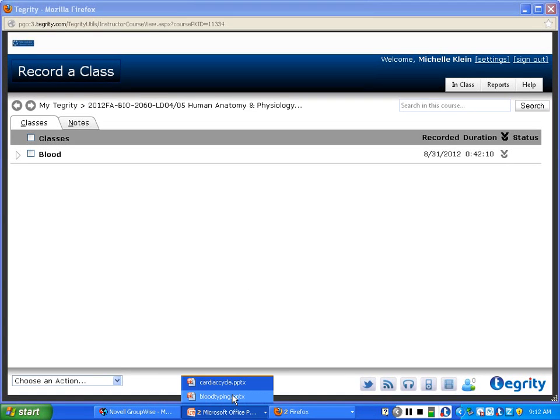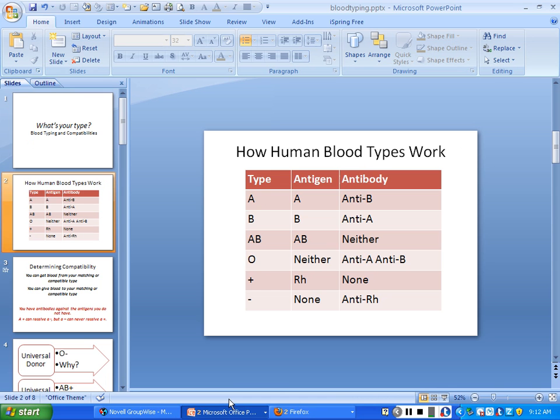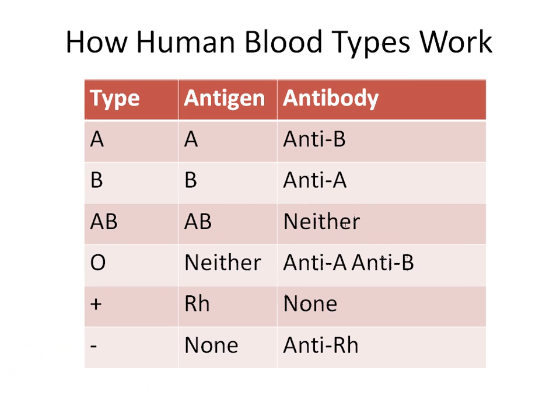Let's do a little bit of a review of blood typing and how it works. Recall that potentially on an individual's red blood cells you would find a molecule sticking out of the membrane. That molecule is an antigen. An antigen, to loosely define it, is anything that can stimulate an immune response.